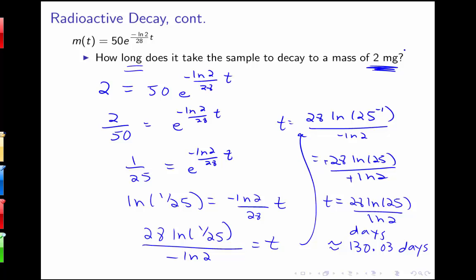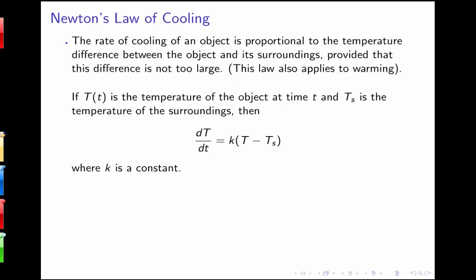The key tools in these problems are using logs to solve for values, log properties to simplify, and the exponential formula to set up the problem. Now we'll discuss Newton's law of cooling. This law states that the rate of cooling of an object is proportional to the temperature difference between the object and its surroundings, provided the difference is not too large. This law also applies to warming.